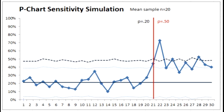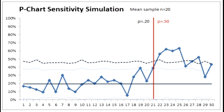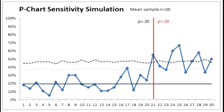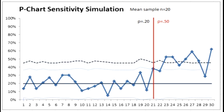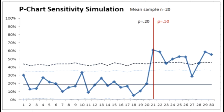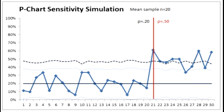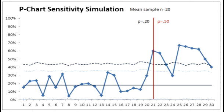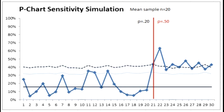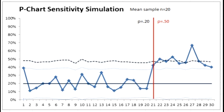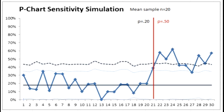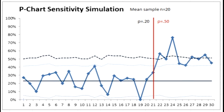We can see that as we run replications of this situation, the p-chart is doing an excellent job of detecting this change. Just about every time we collect a random sample of data, the p-chart with these parameters is giving us a signal almost immediately that indicates that the shift in the process has been successful. So it's a pretty good situation.